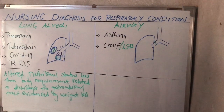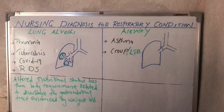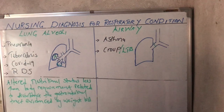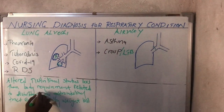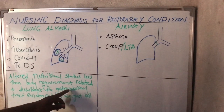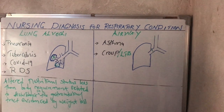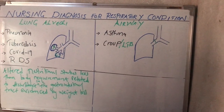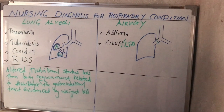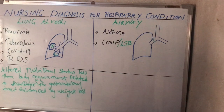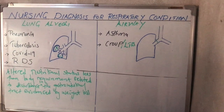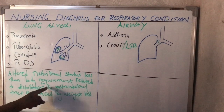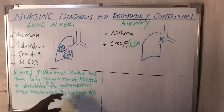When someone is sick, they cannot maintain a balanced diet. The GIT becomes disturbed — sometimes the patient starts vomiting — causing anorexia, which is lack of appetite. So: altered nutritional status, less than body requirements, related to disturbance in the gastrointestinal tract, evidenced by weight loss.